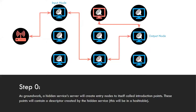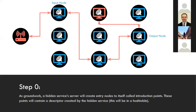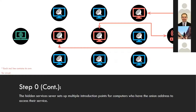Step zero is work already done by the hidden service. The hidden service creates introductory points with a descriptor so that the Tor service knows this descriptor belongs to a particular server. This descriptor is held in a hash table. The hidden service creates multiple introductory points.